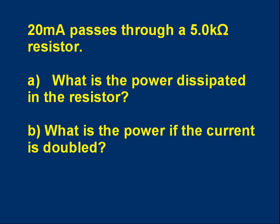Here's another problem for you. 20 milliamps is passing through a 5.0 kilo-ohm resistor. What's the power dissipated in the resistor? What is the power if the current is doubled? Pause the video. Try it.